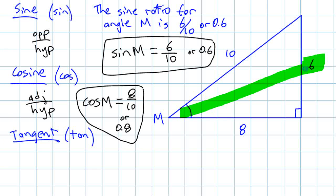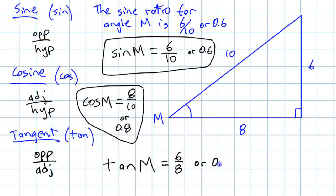It's going to be, from this angle, it's going to be that opposite side over this adjacent side. Tangent is opposite over adjacent. So if you're going to write the tangent ratio for that angle, tangent ratio for angle M is 6 eighths. Or if you want it as a decimal, 0.75. That's those are the three primary trig ratios for that triangle.